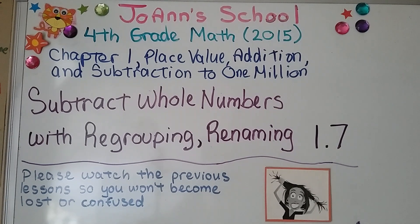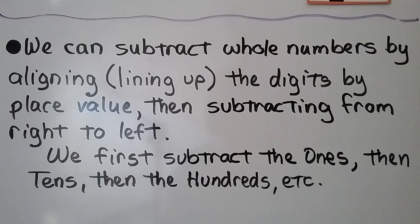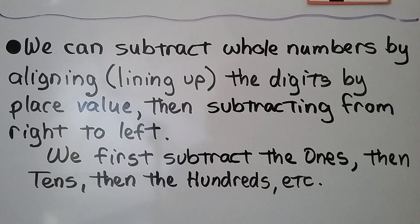Lesson 1.7: Subtract whole numbers with regrouping and renaming. We can subtract whole numbers by aligning — that means lining up — the digits by place value, then subtracting from right to left. We first subtract the ones, then the tens, then the hundreds, and so on.